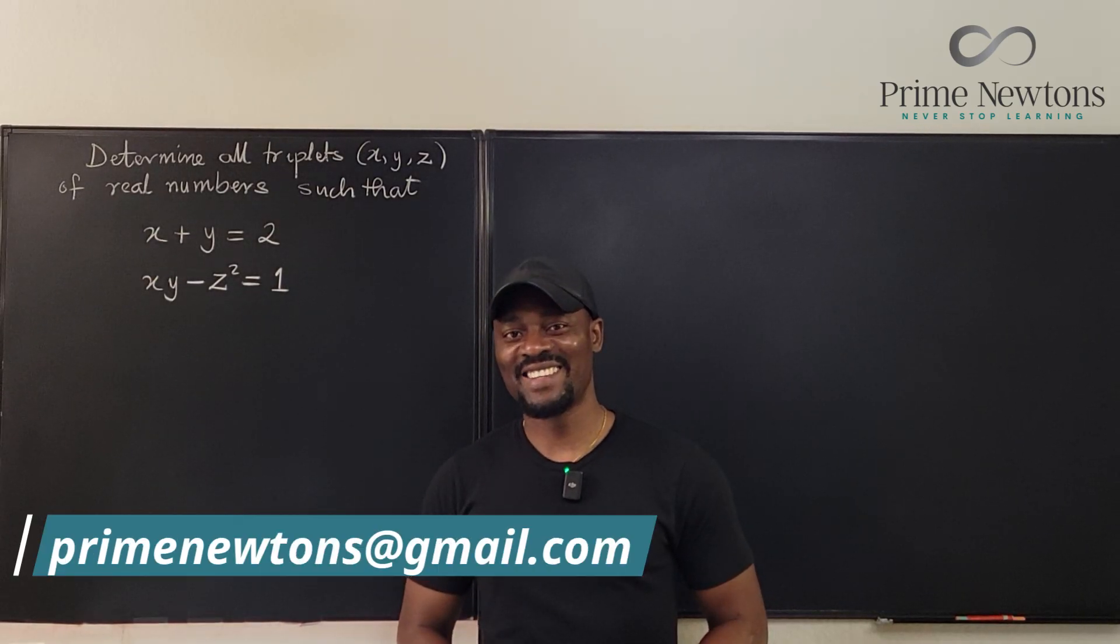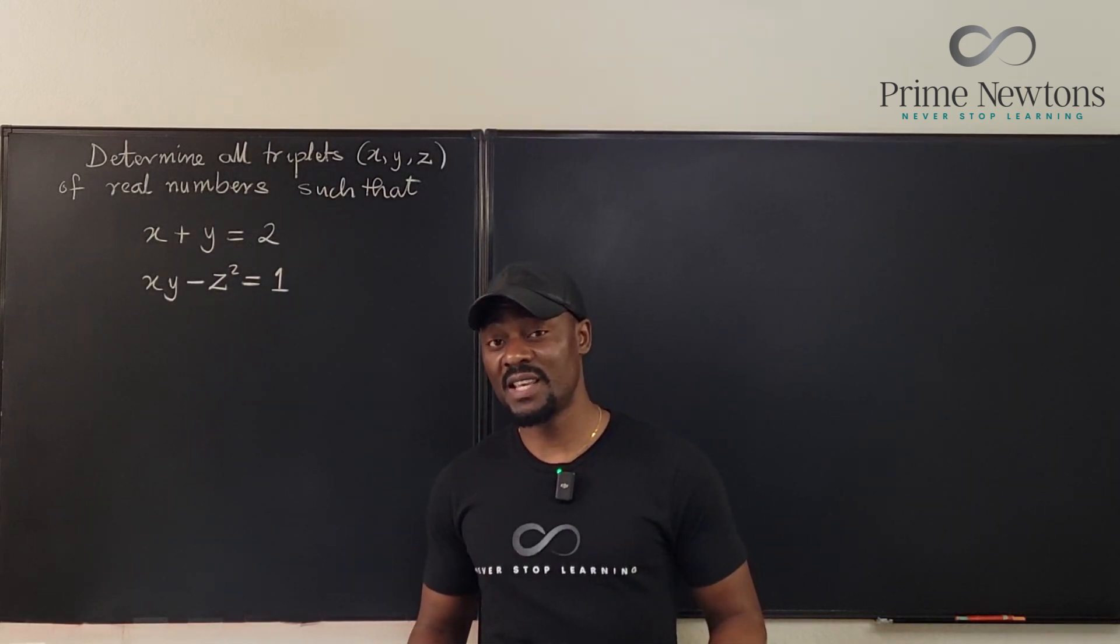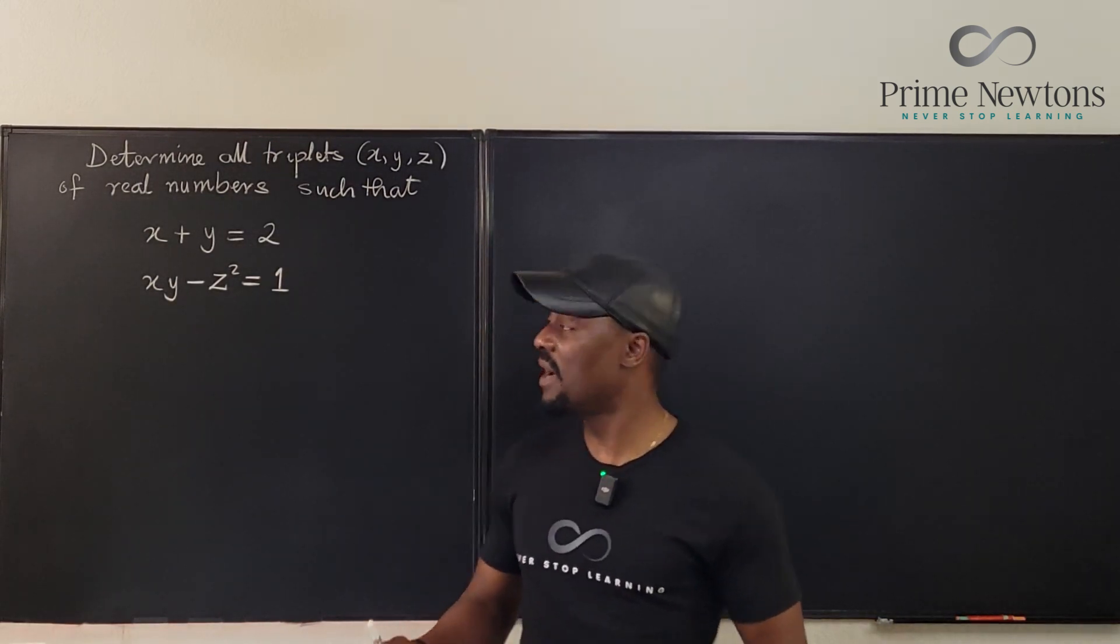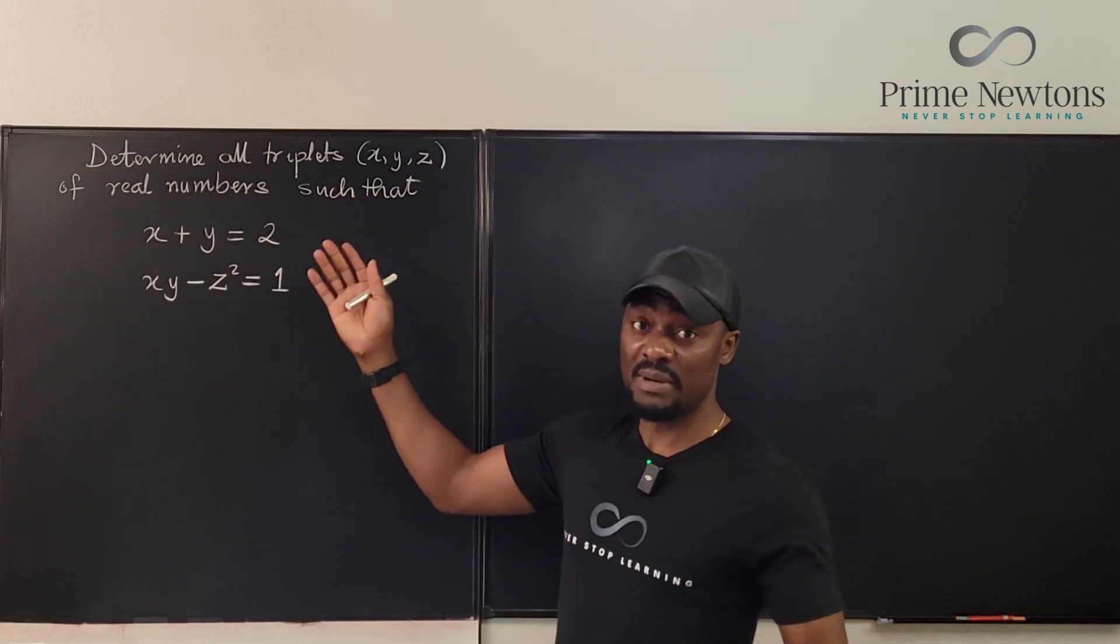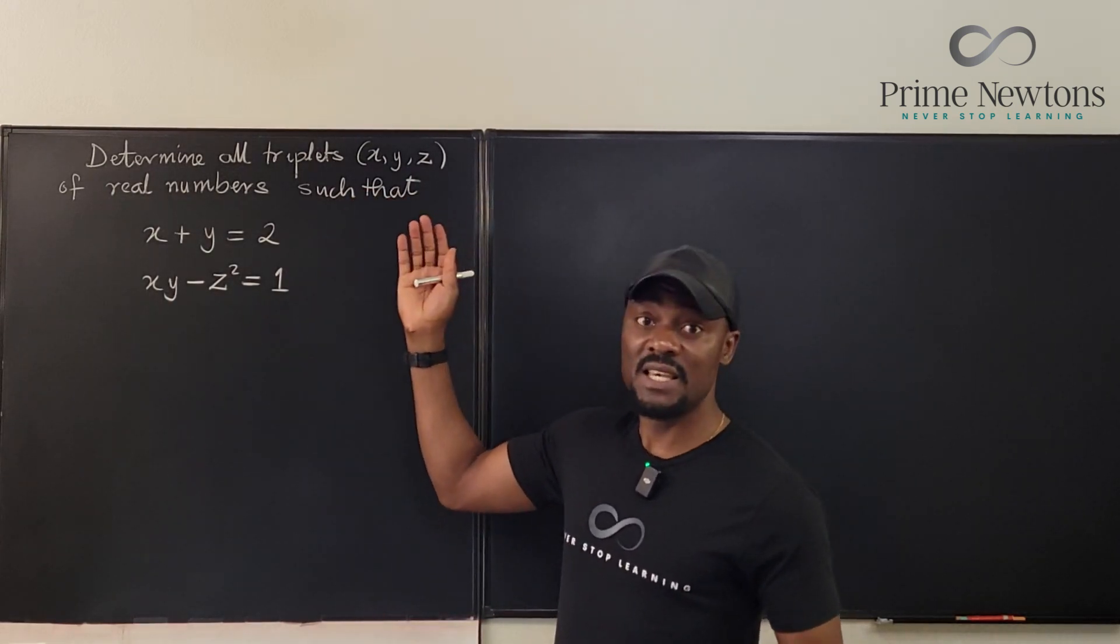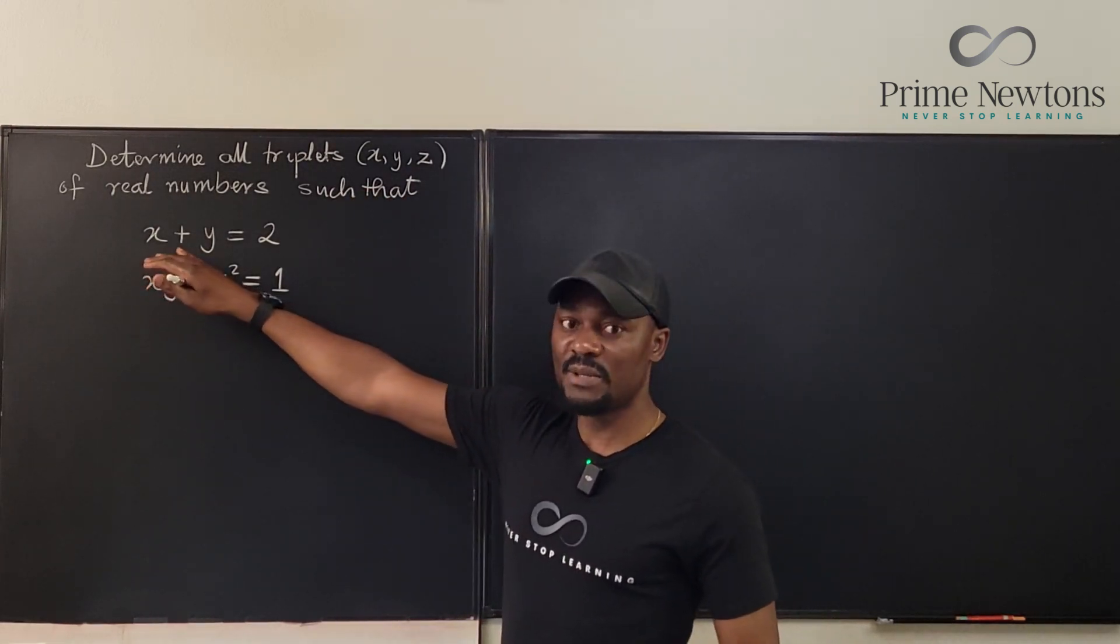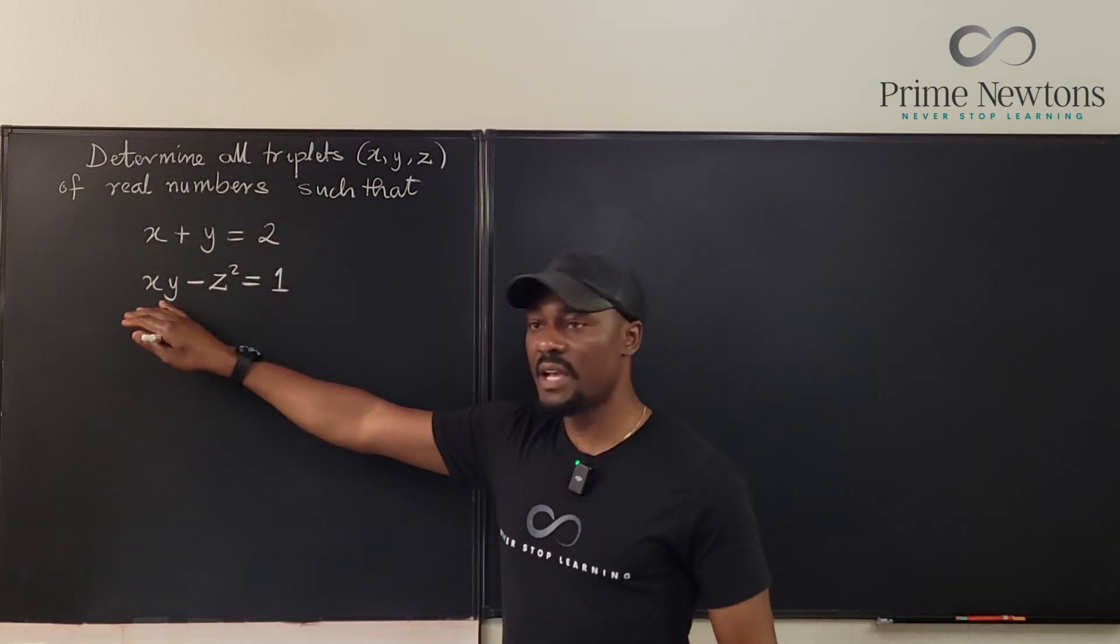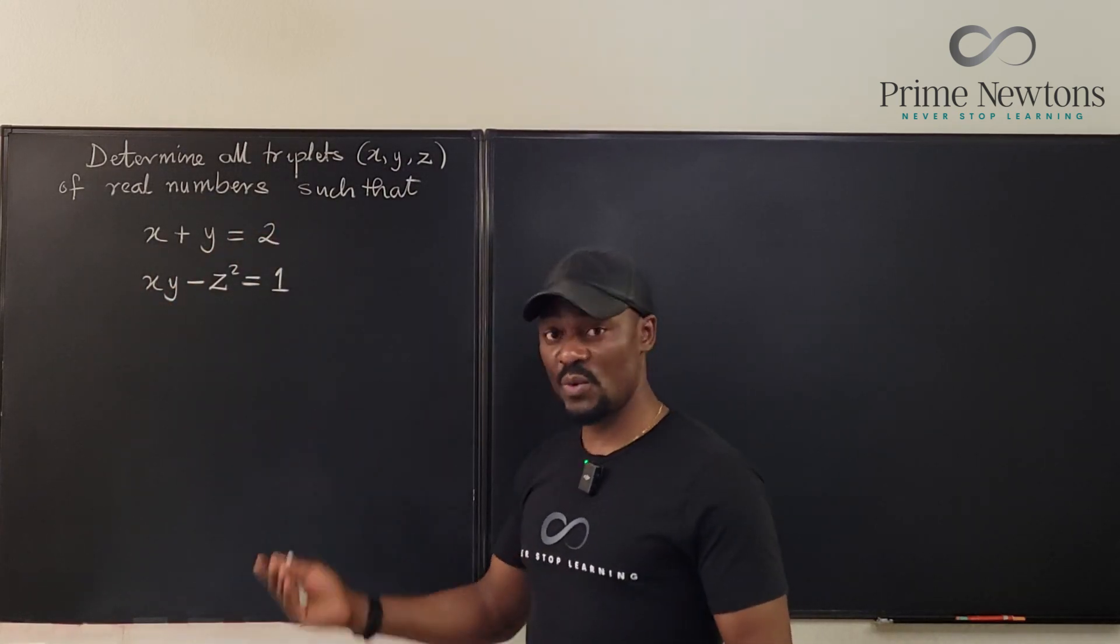Welcome to another video. This is a question from Denmark, I think 2006. The mission is to find all triples or all triplets x, y, and z such that x plus y equals 2 and xy minus z squared equals 1.